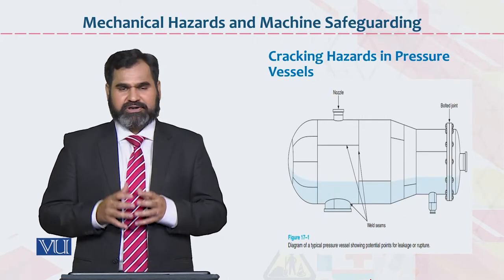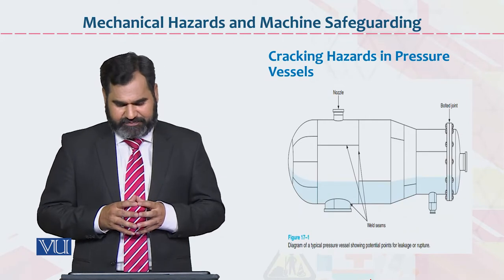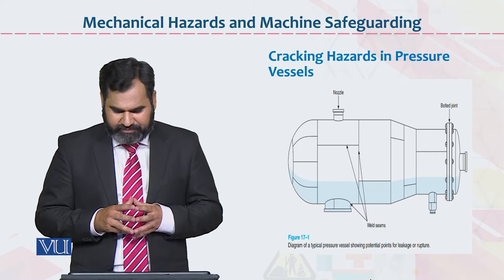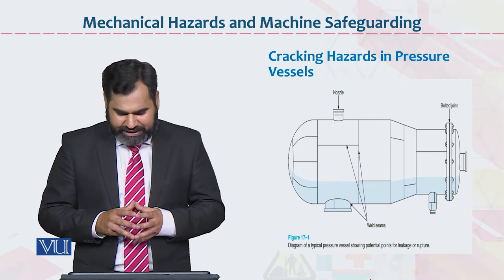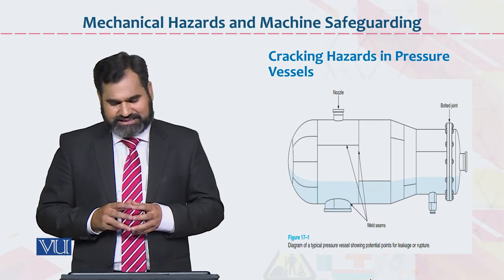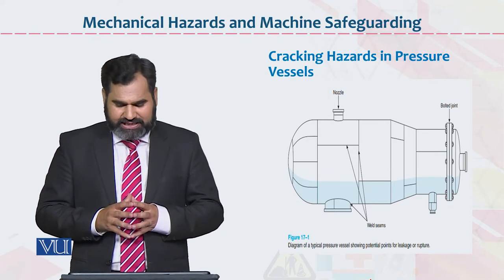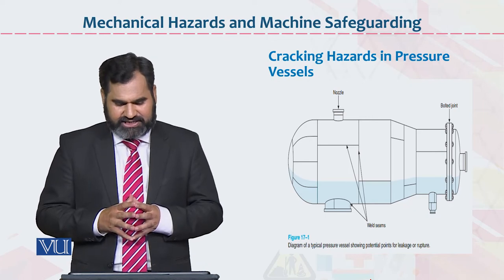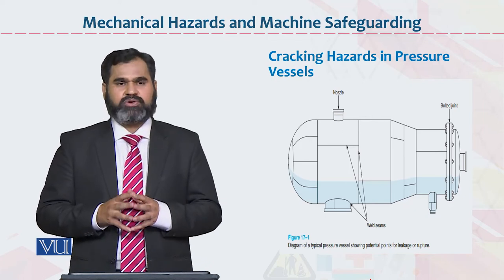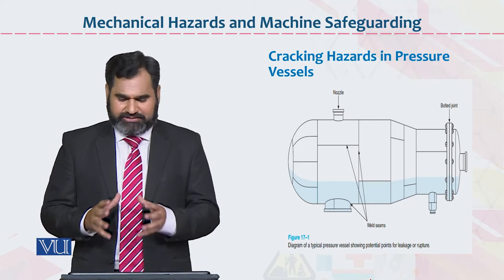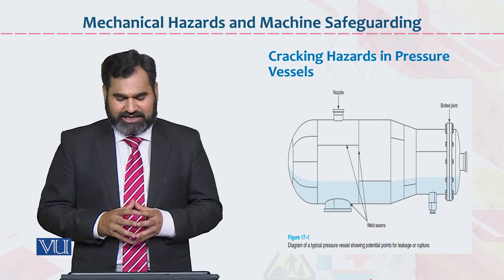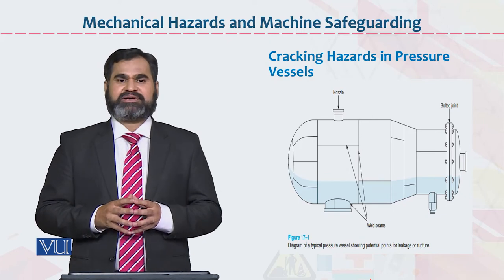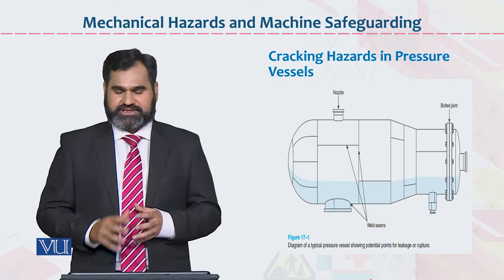Yeh iska pictorial effect hai dear students — yahan par dekhein: weld joint hai, nozzle hai, aur weld seams hain. In sab cheezein ko agar properly joint ke saath fix kiya gaya hoga toh problem nahi hogi. Agar in sab cheezein ke andar technical problem exist karegi toh us wajah se problem paida ho sakti hai.